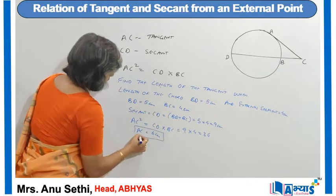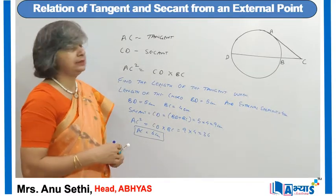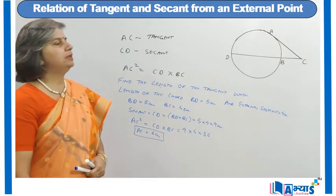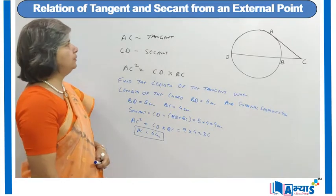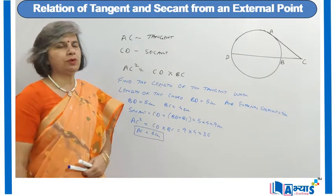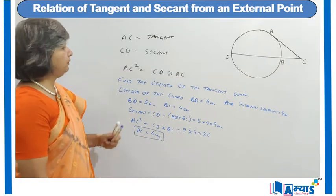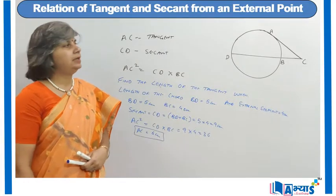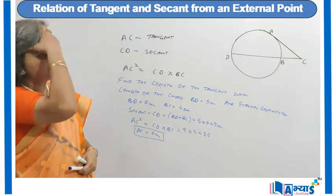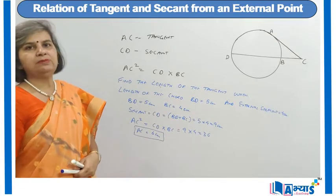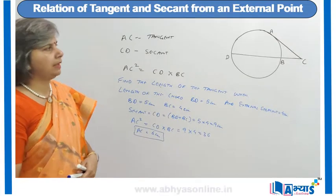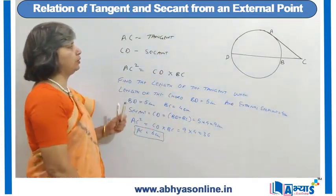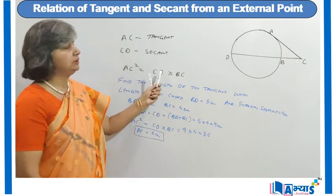This is how we can find the length of the tangent when the secant length and the external segment are given. We applied the concept that the square of the tangent is equal to the product of the secant into the external segment. We were given that BD is of length 5 centimetre and the external segment BC is 4 centimetre, so the secant CD is equal to BD plus BC, that is 5 plus 4, which is 9 centimetre.